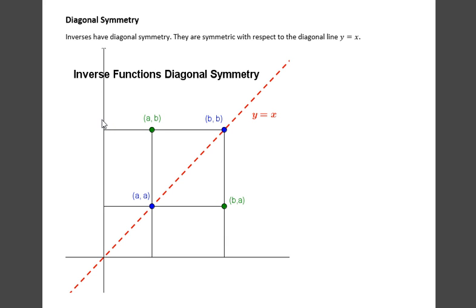Diagonal symmetry. Inverses have diagonal symmetry. They are symmetric with respect to the diagonal line y equals x. Why is this so? If we take any ordered pair, AB, in a relation, and look at its inverse, which would be BA,